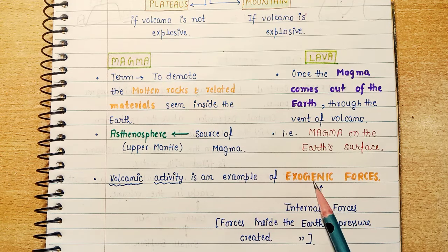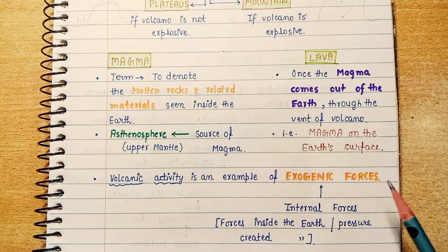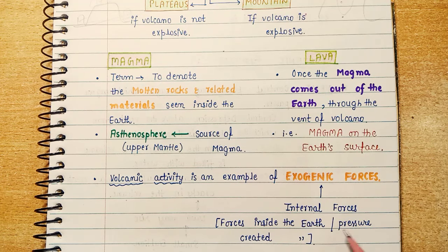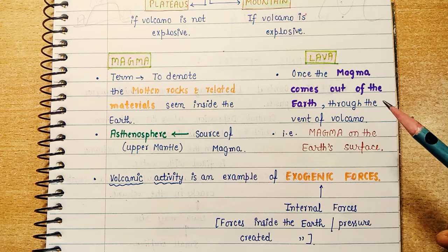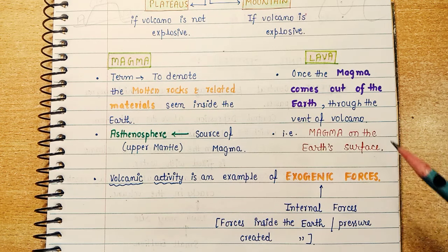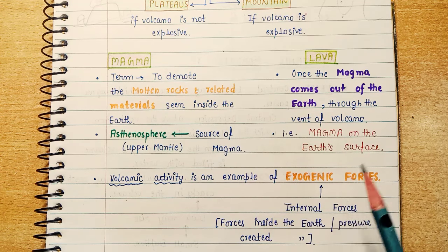Volcanic activity is an example of endogenic forces. Endogenic forces means internal forces — forces inside the earth, or pressure created inside the earth. These forces are created inside the earth and show their effect on the earth's surface. Therefore, volcanic activity is an example of endogenic forces. This is also a common exam question.